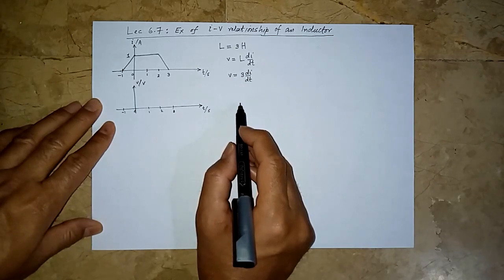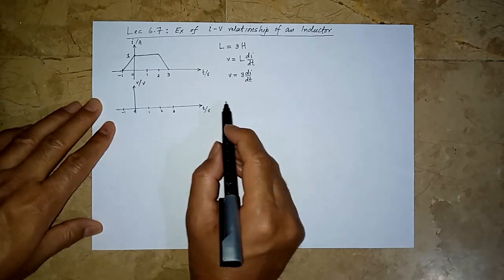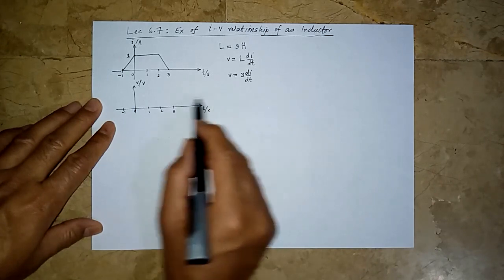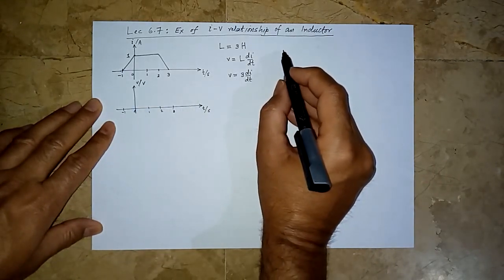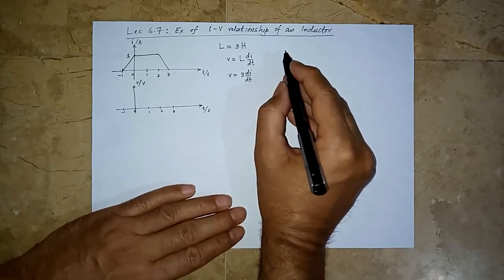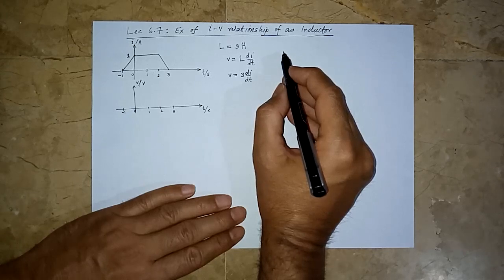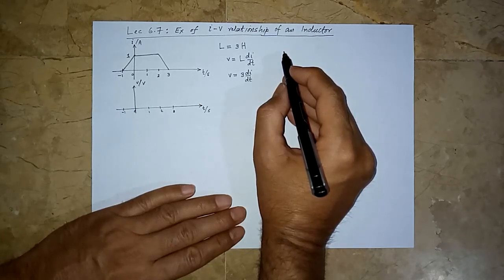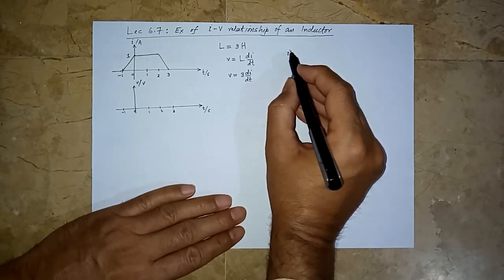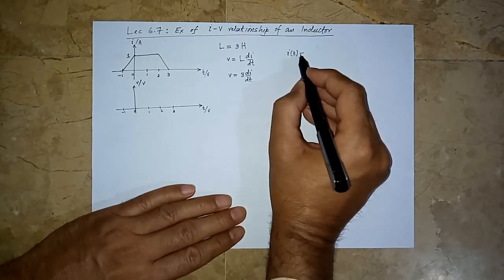We can do it intuitively or mathematically. Let me first do it mathematically, because the right way is to use mathematics to reach the answer. If you don't apply mathematics for complicated problems, you would not be able to solve them. So here, i is a waveform described by a piecewise function.